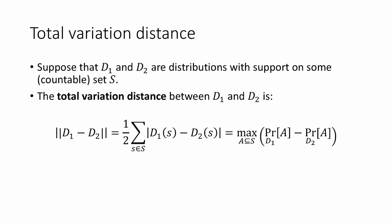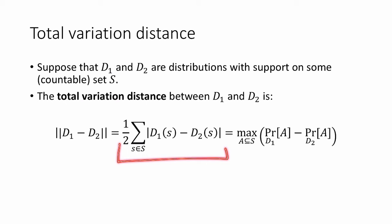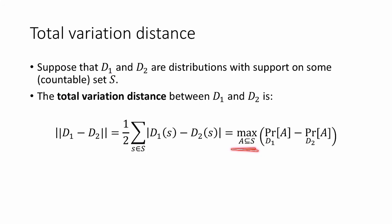The total variation distance is defined as follows. Suppose that d1 and d2 are distributions that have support on some countable set S. This definition goes through just fine for uncountable sets, but then we have to take integrals, so let's assume S is countable. The total variation distance between d1 and d2 is one half of the L1 norm between the probability mass functions of d1 and d2 — that is, the sum over all s in S of the absolute difference between the probability of s under d1 and under d2. It turns out this definition is the same as the maximum over all subsets A of S of the probability of event A under d1 minus the probability of event A under d2.